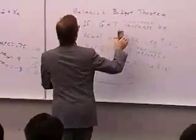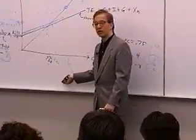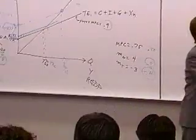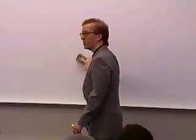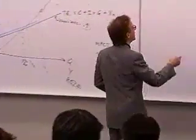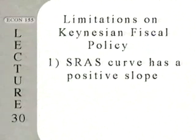We've covered the positive side of the Keynesian model. The negative side is that it's not always as effective as it seems. There are limitations on Keynesian fiscal policy. The first limitation: the short-run aggregate supply curve has a positive slope.